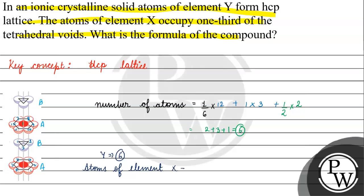Where? One-third of tetrahedral voids. If we talk about tetrahedral voids, the number of tetrahedral voids is double the number of atoms.